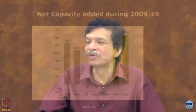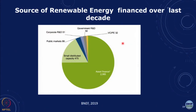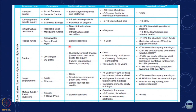Looking at the sources of finance, we said 2.6 trillion, of which more than 2 trillion is asset financing — where you are trying to build a power plant, finance that asset, and the value of the asset is engaged against it. You have an escrow arrangement so you can sell the asset and recover the money if the project does not work. Then there is small distributed capacity funding, some government funding, some public markets, overseas R&D and corporate R&D, but predominantly asset finance.